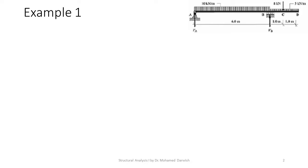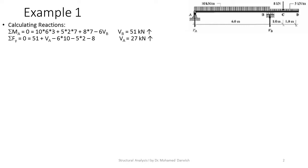The first example is beam ABCD, which has an overhanging cantilever portion. First we calculate the reactions. Taking sigma moment about A equals zero: 10 times 6 times 3, plus 5 times 2 times 7, plus 8 times 7, minus 6 VB equals zero. So VB equals 51 kN.